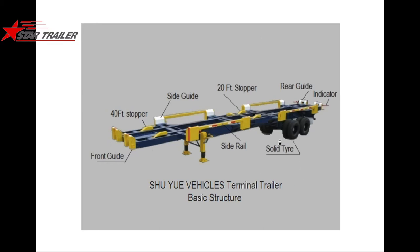This is a picture of our terminal trailer. In America they call them bum cart, and in China they call them container chassis or terminal chassis, because it is designed to carry containers from the vessel to the container yard. You can see we use solid tires, side rails, and also front guides. We have indicators in the four corners to show other drivers the width of the semi-trailer. We also have stoppers in the middle and in the front of the trailer to prevent the container from falling off during braking.